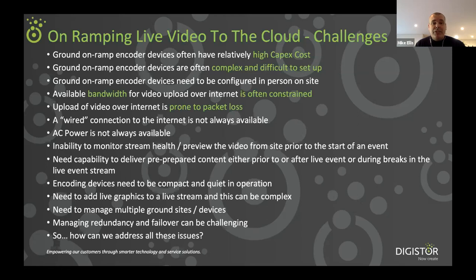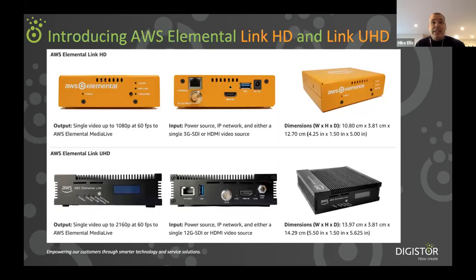So really, how can we address all of these issues? What we're presenting here today is the combination of the AWS Elemental Link HD and Link UHD devices, together with our cloud media services and specifically our MediaLive service for powering live events. We have two models: the original Elemental Link HD, which will deliver video up to 1080p 60 frames per second, and the Link UHD, which we recently launched, delivering full UHD resolution up to 3840 by 2160 at up to 60 frames per second. Both devices feature broadcast coaxial SDI inputs — 3G SDI or HD-SDI for the Link HD, and 12G SDI for the Link UHD — as well as HDMI inputs.